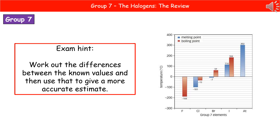A favourite exam question gives you key properties with some missing from the table or graph. For example, fluorine's melting point and astatine's boiling point might be missing. Don't just put a number that's above or below - the exam is more specific. Work out the differences between each value and apply that difference to find the missing one. If you're not accurate, you won't get the marks.